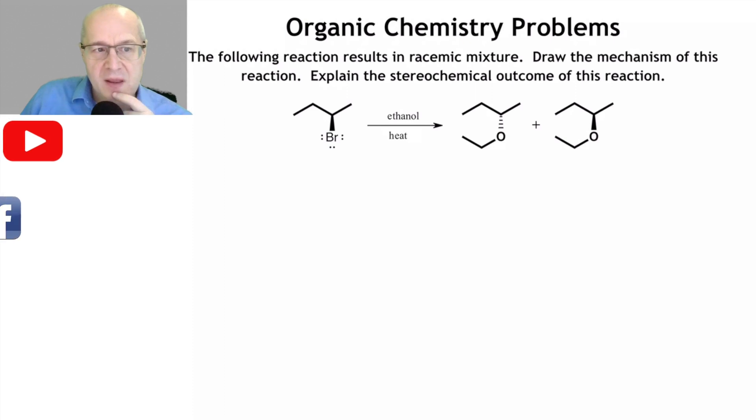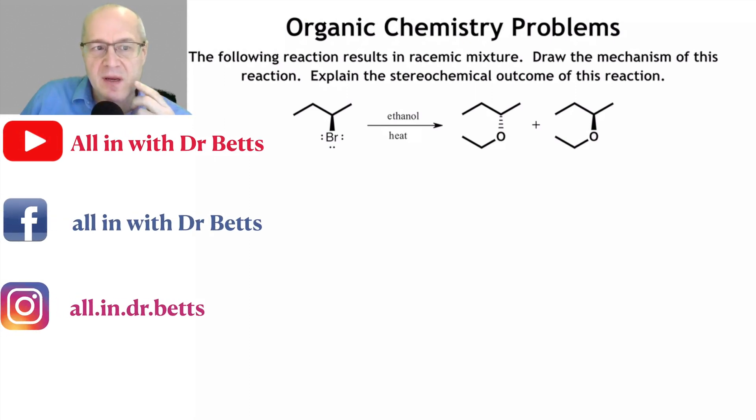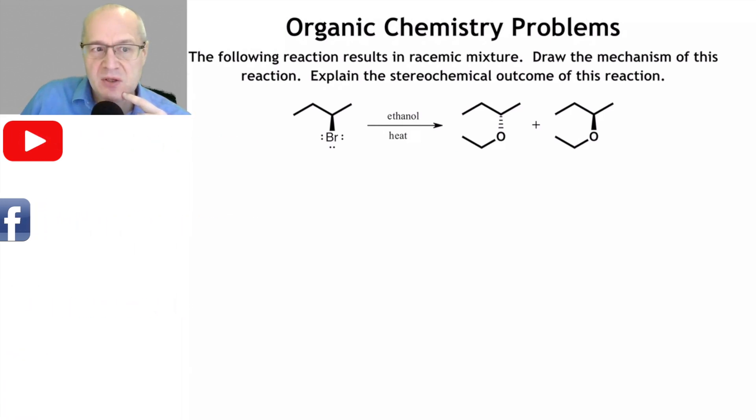It appears we have a chiral secondary halide, presence of ethanol in heat, SN1 conditions again, and we appear to get a racemic mixture from all this. I've got to explain that. Very simple. Watch this.